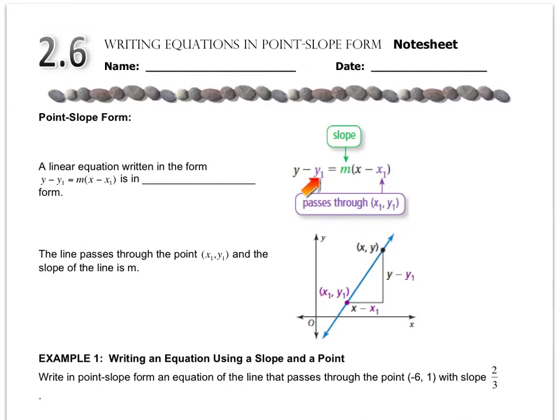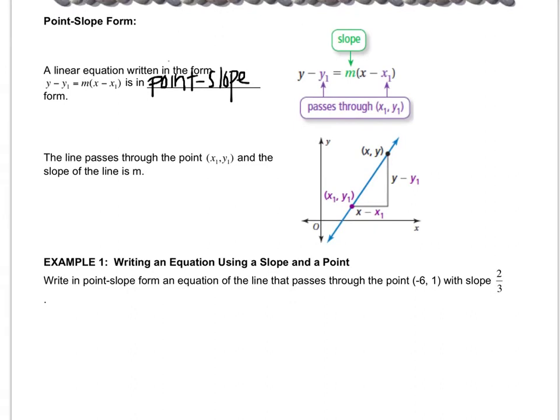So let's look over on the left. A linear equation written in the form y minus y1 equals m times x minus x1 is in point-slope form, because it's using any random point on the line and the slope. If you look at the picture, you'll see that there's a random point labeled, this is it right here, and they've labeled it x1, y1, and then we could find the slope or they'll give us the slope, or we could calculate the slope, and then we can find the formula.